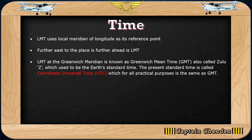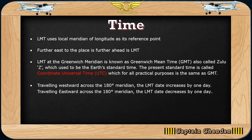LMT at the Greenwich meridian is known as Greenwich Mean Time, GMT, also called Zulu time, which used to be the Earth's standard time. The present standard time is called Coordinated Universal Time, UTC. For all practical purposes UTC is the same as GMT. Traveling westward across the 180-degree meridian, the LMT date increases by one day; traveling eastward across the 180-degree meridian, the LMT date decreases by one day.